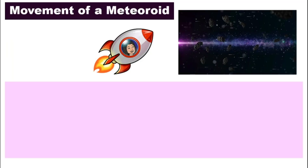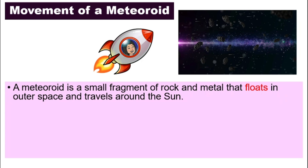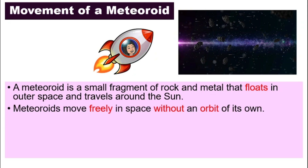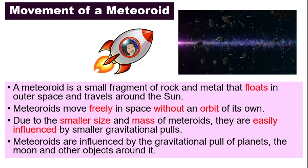Do you still remember what a meteoroid is? Let's review a little bit. A meteoroid is small fragments of rock and metal that float in outer space, and they travel around the sun. They move freely because they do not have an orbit of their own.